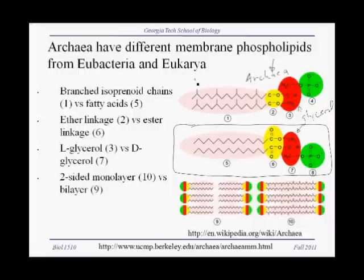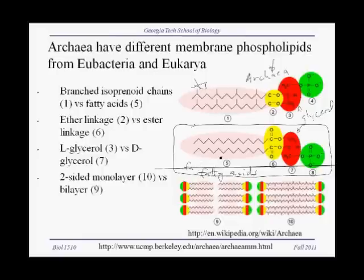If you look at the hydrophobic tail, what you see is something very different. In bacteria and eukaryotes, the hydrophobic tail is composed of fatty acids. Fatty acids are built two carbons at a time from molecules called acetate, which contains two carbons. So our fatty acid tails are just long straight hydrocarbon chains.